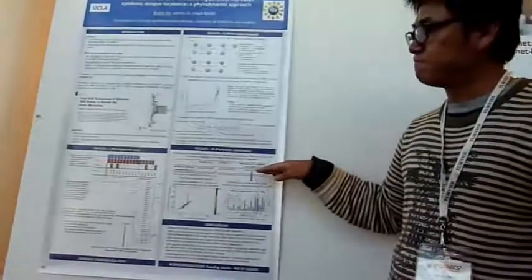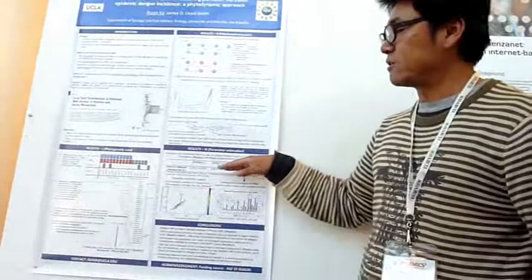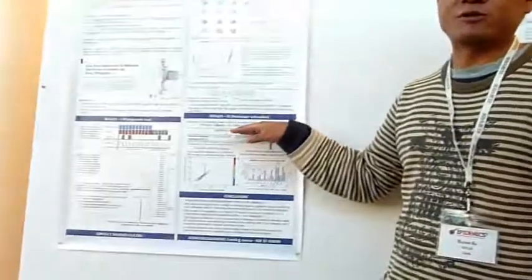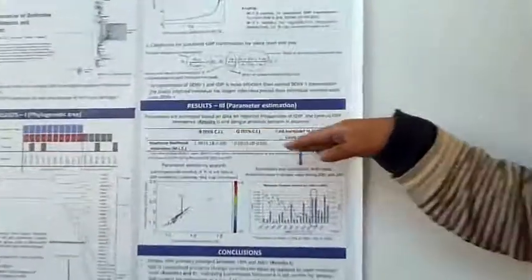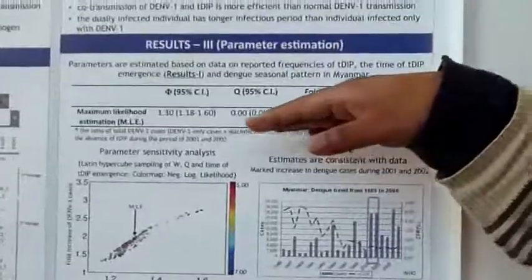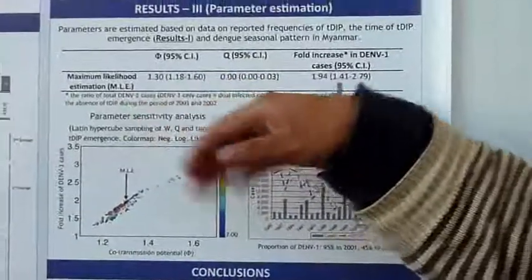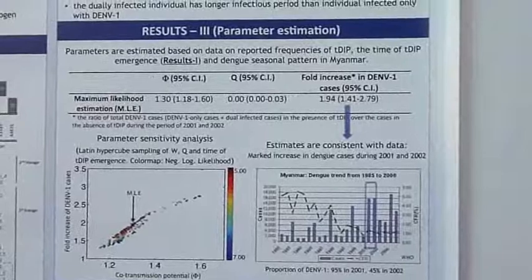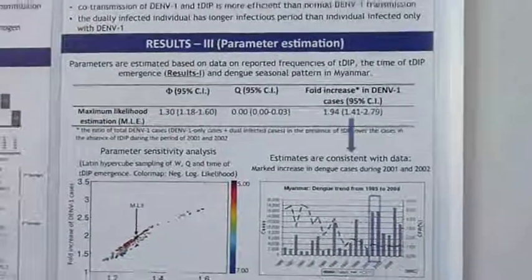We further estimated the value of this increase in the co-transmission potential. The estimated value is 1.3, which means the co-transmission is 1.3-fold increase compared to the wild-type Dengue transmission only.